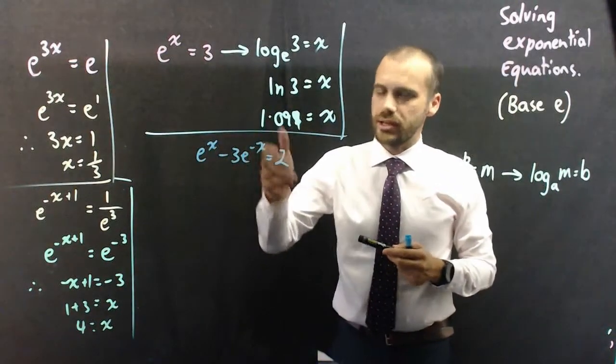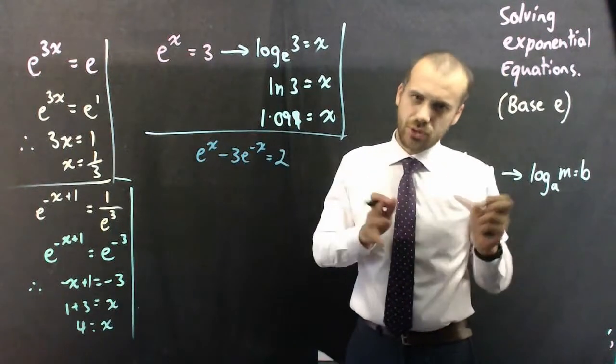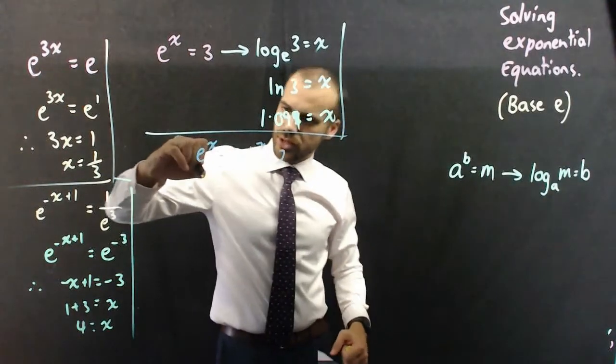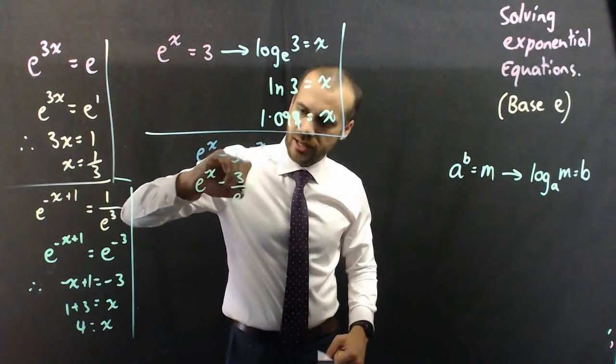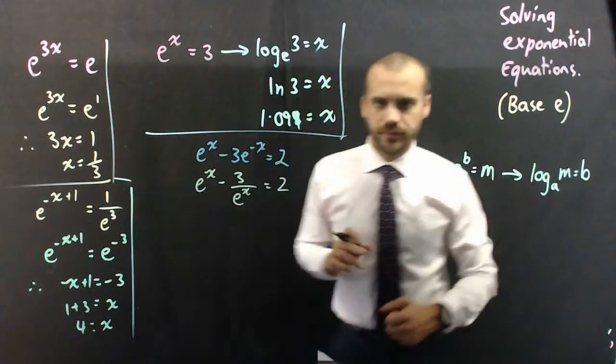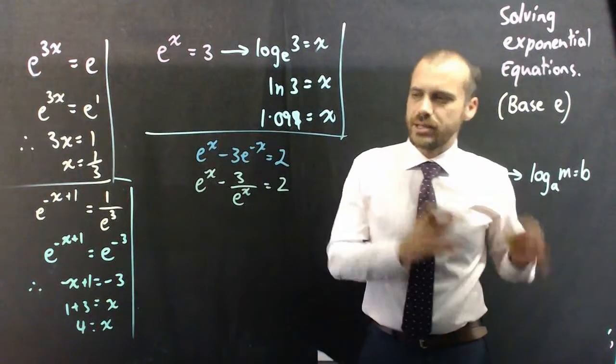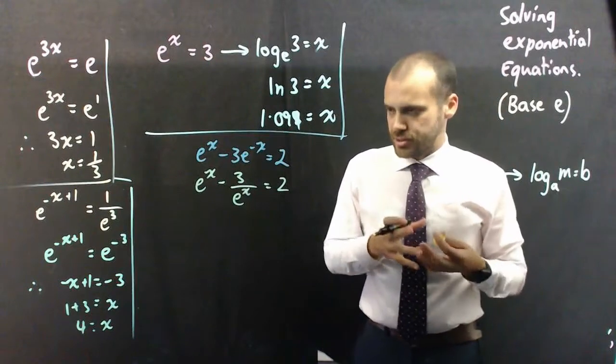e to the x minus 3 e to the negative x equals 2. This is going to end up doing some weird quadratic thing, and you've seen these sorts of questions before. So, I can write it as e to the x minus 3 over e to the x equals 2. Now, it's not really clear what to do here, so you need to make a bit of a mental leap. If I multiply everything by e to the x, watch what happens.